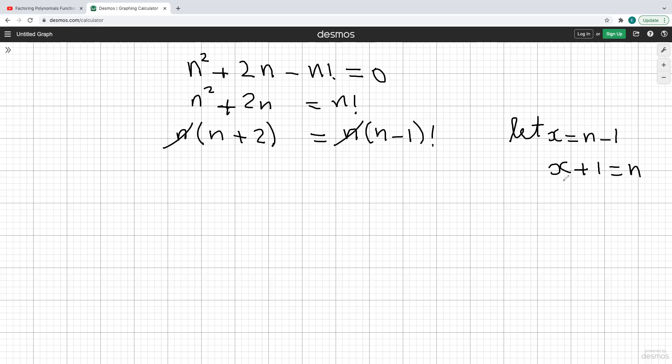Now, if that's the case, if n is x plus 1, then if I sub x plus 1 for the n here, I'm going to get x plus 3. And that is going to equal x factorial.